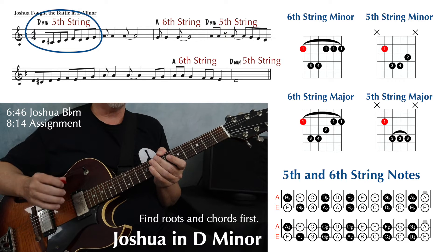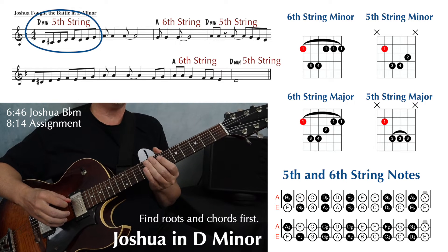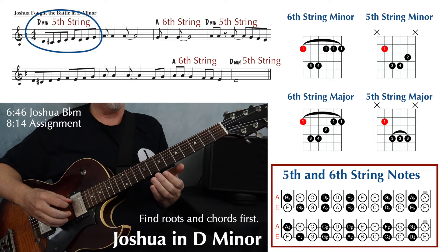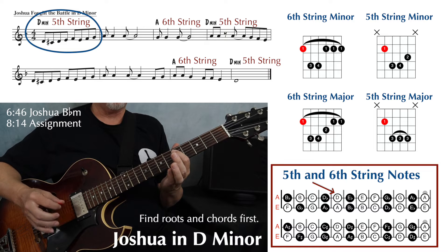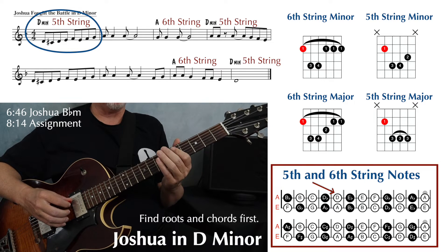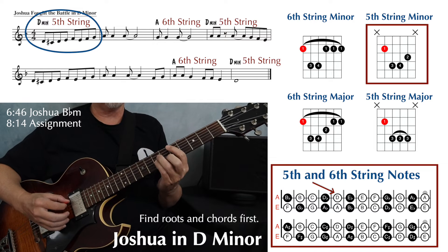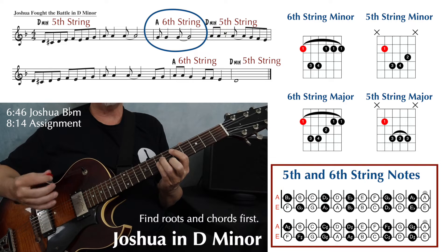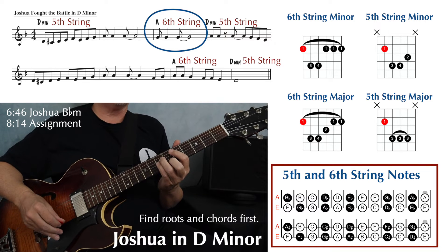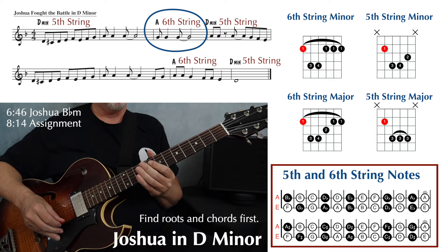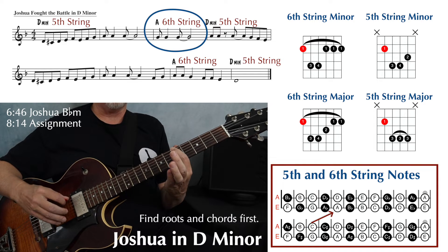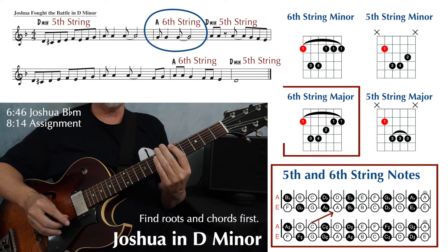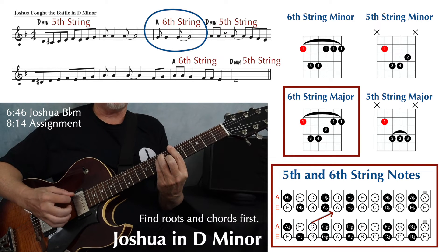Our first chord is D minor — we're going to play this with the root on the fifth string, so we need to find our D on the fifth string. That's at the fifth fret, and because the root is on the fifth string we play our fifth string minor shape. The other chord is A major, going to be on the sixth string. Find that root note first — the A is at the fifth fret, just on the sixth string — and we're going to use our sixth string major shape from page three.